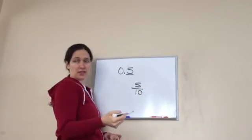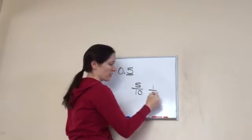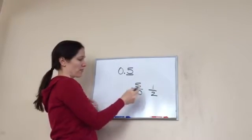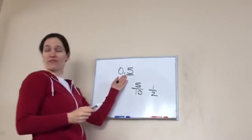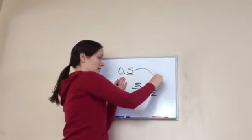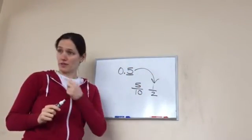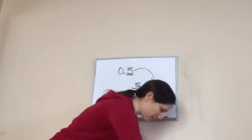5 over 10. And then when we reduce that, it becomes 1 half. 5 over 1 to 5, 1 time. 5 over 1 to 10, 2 times. So, 0.5 is 1/2 as a fraction. Got it? Mm-hmm. All right. Let's do another one.